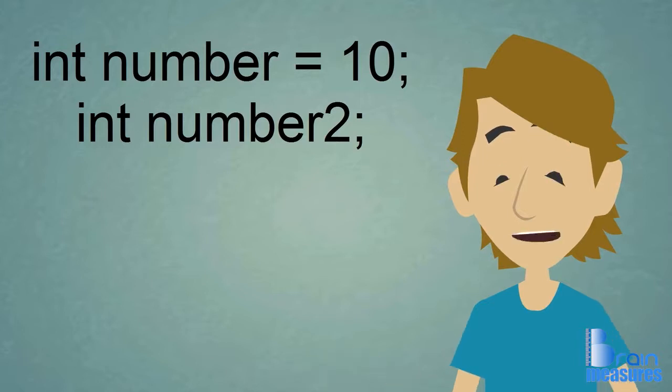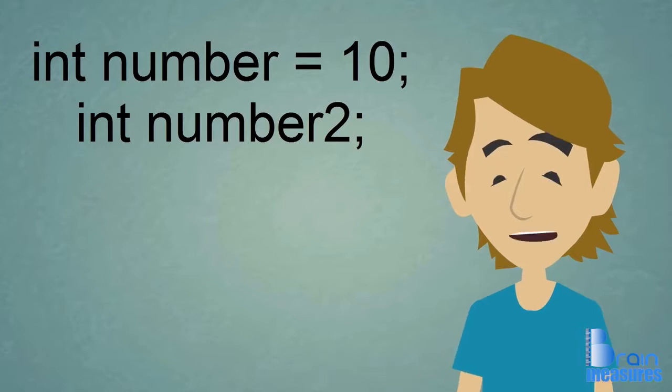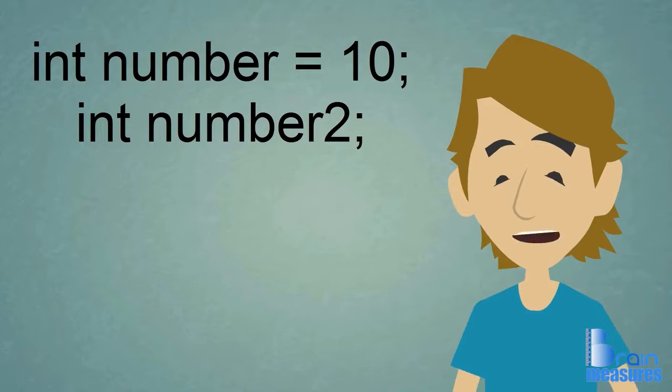Notice how there is no space between number and 2. This is important because most compilers view the space as a separator. So the compiler reads the word number and the number 2 separately.